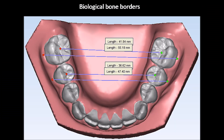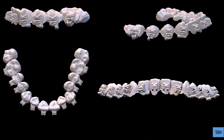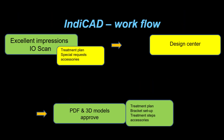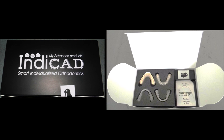Several points of the biological bone borders are analyzed in order to help choose the best wire shape for the specific case. Once the treatment plan is decided and approved, the brackets are set up with specific individualization according to the treatment plan and bracket system. The bracket setup is sent to the doctor for observation and approval and can be viewed with any 3D viewer. Part of the information sent includes accessory recommendations such as wires, hooks and springs, as well as a treatment protocol if requested. At the last step, the chosen pack is delivered to the doctor.